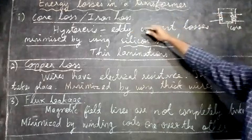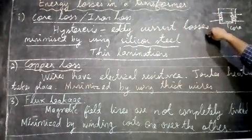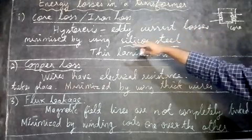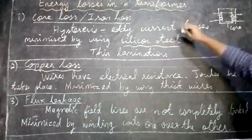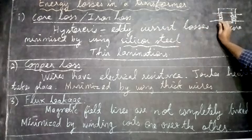Hysteresis occurs and eddy currents are produced, causing eddy current losses. This can be minimized by using silicon steel to make the transformer.